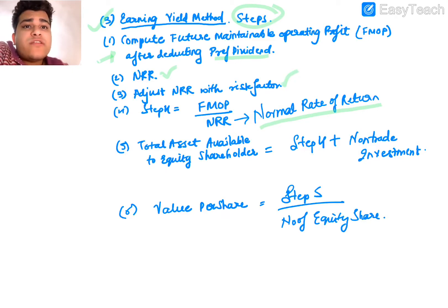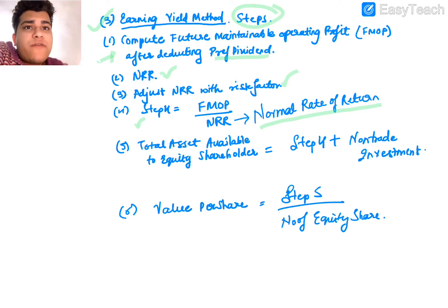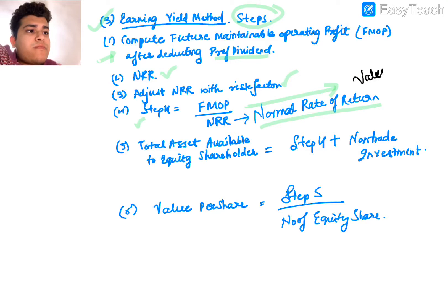Step three: adjust the normal rate of return (NR) with the risk factor. We compare the risk the company is facing and the benefits it is getting, then adjust NR based on the risk factor. Step four: find the actual valuation based on profit — this is the future maintainable profit of the company divided by the adjusted percentage, which gives us the full total value.